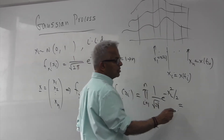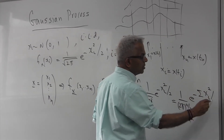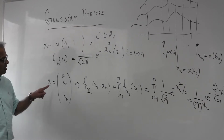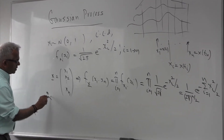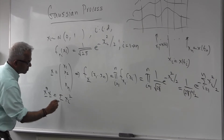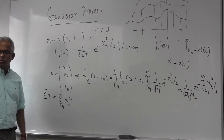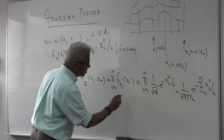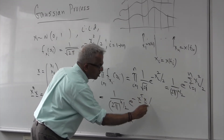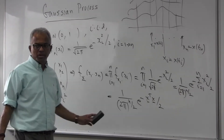If you do this product over 1 through n, the exponent becomes a summation. So the joint density is (1/(2π)^{n/2}) exp(−∑ x_i² / 2). Now, since x^T x is just the dot product equal to ∑ x_i², I can write the joint density function compactly as (1/(2π)^{n/2}) exp(−x^T x / 2).